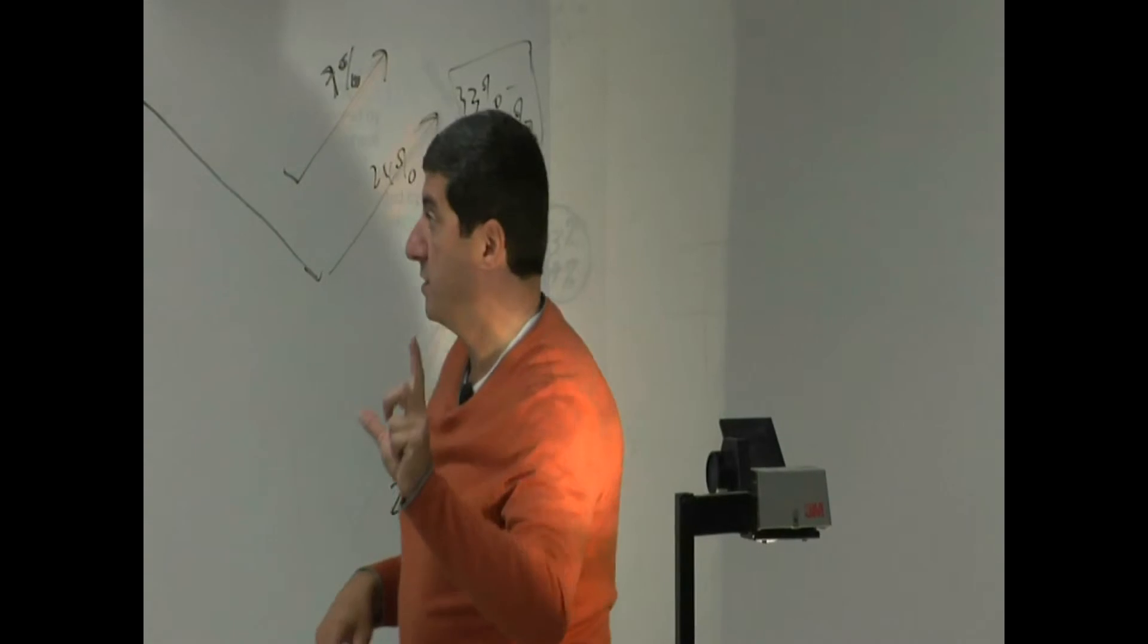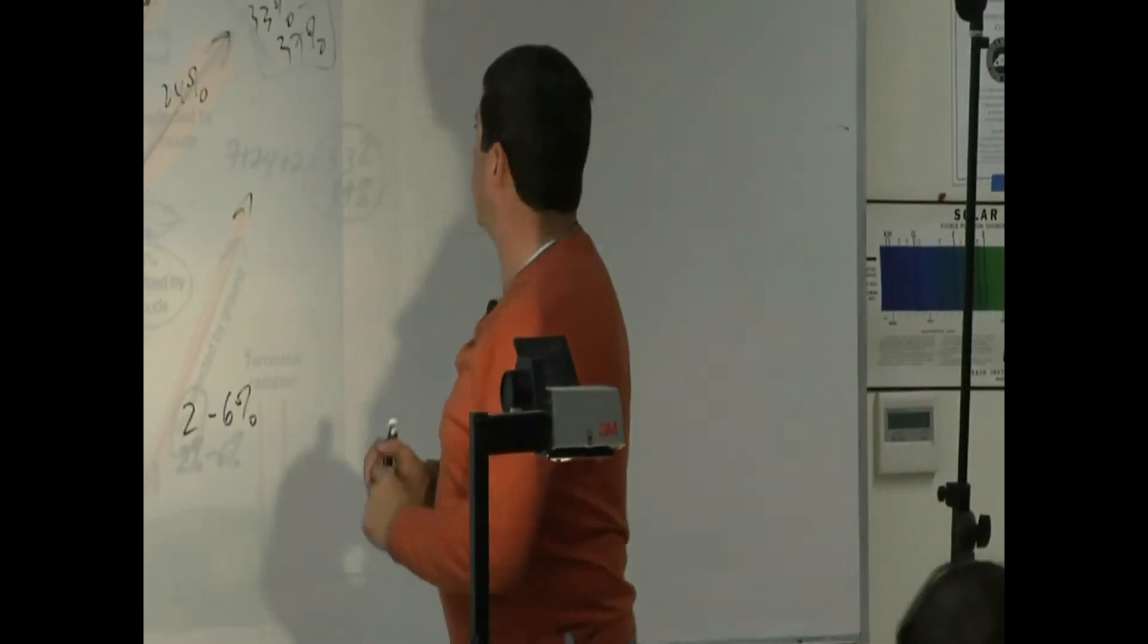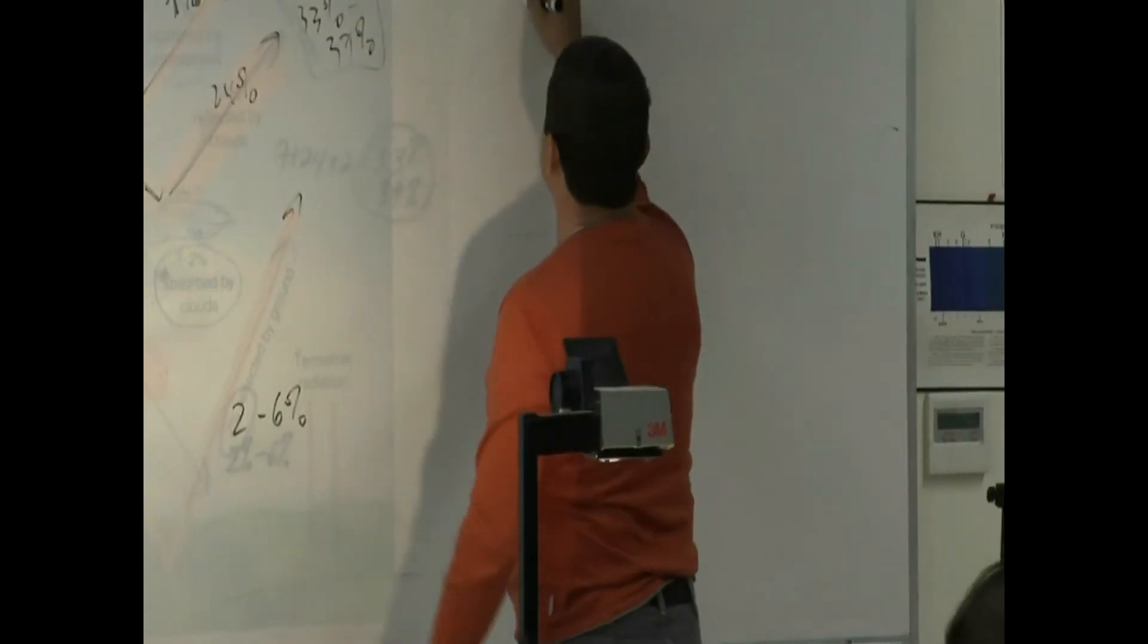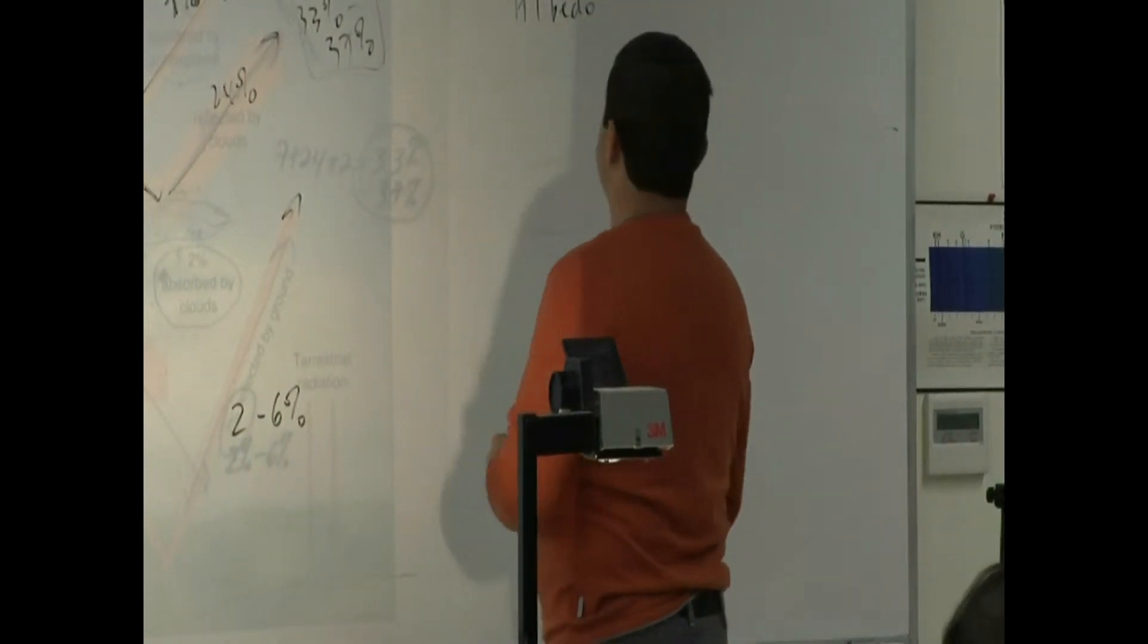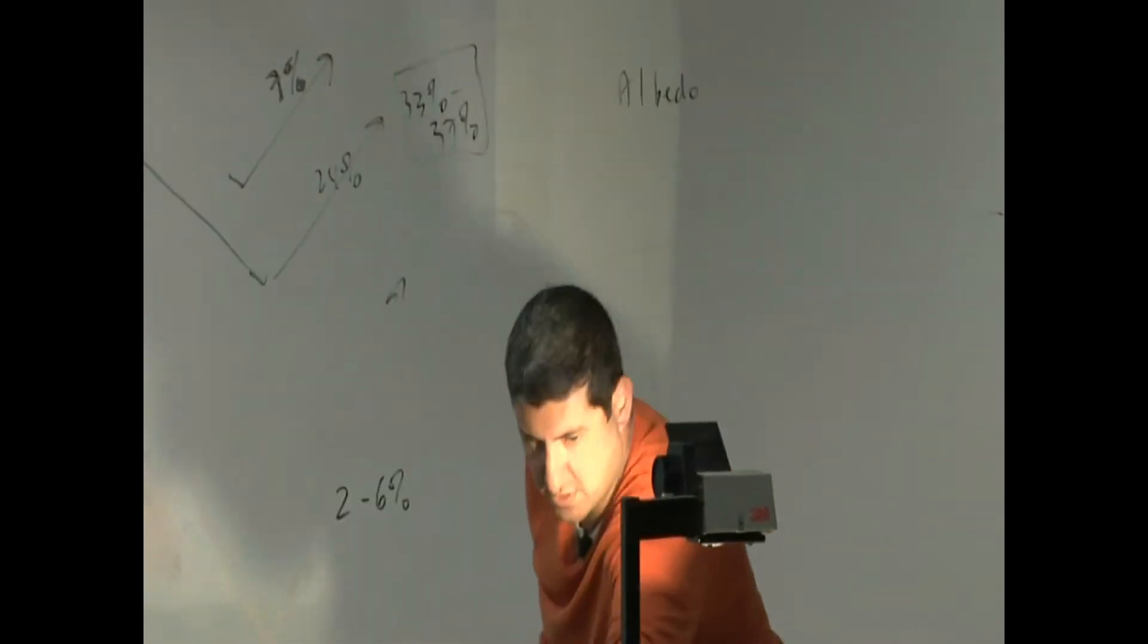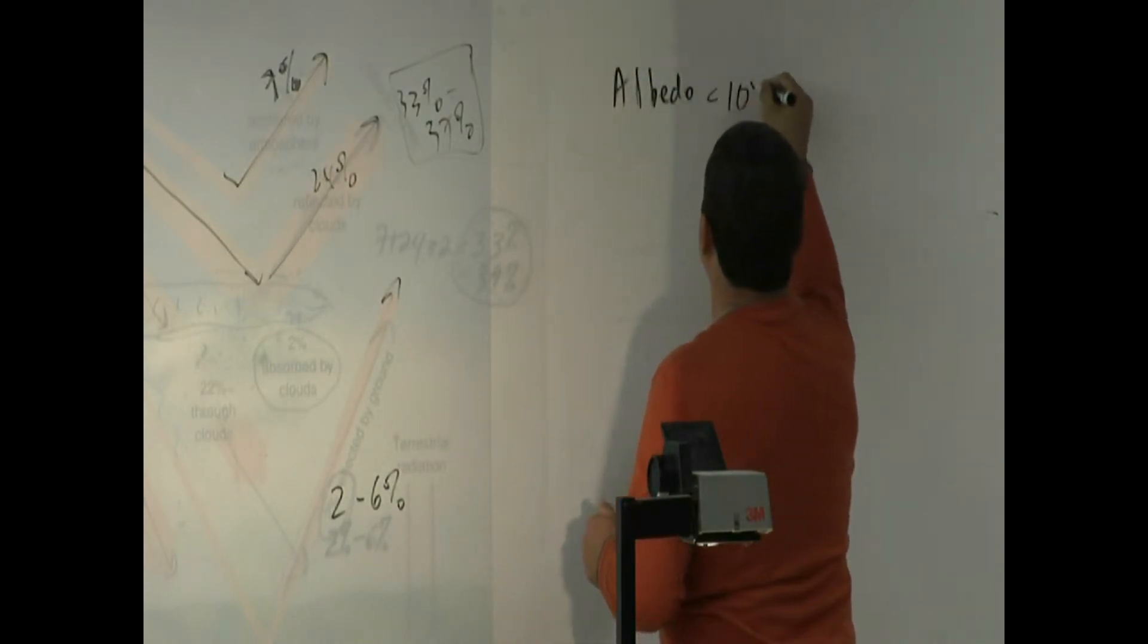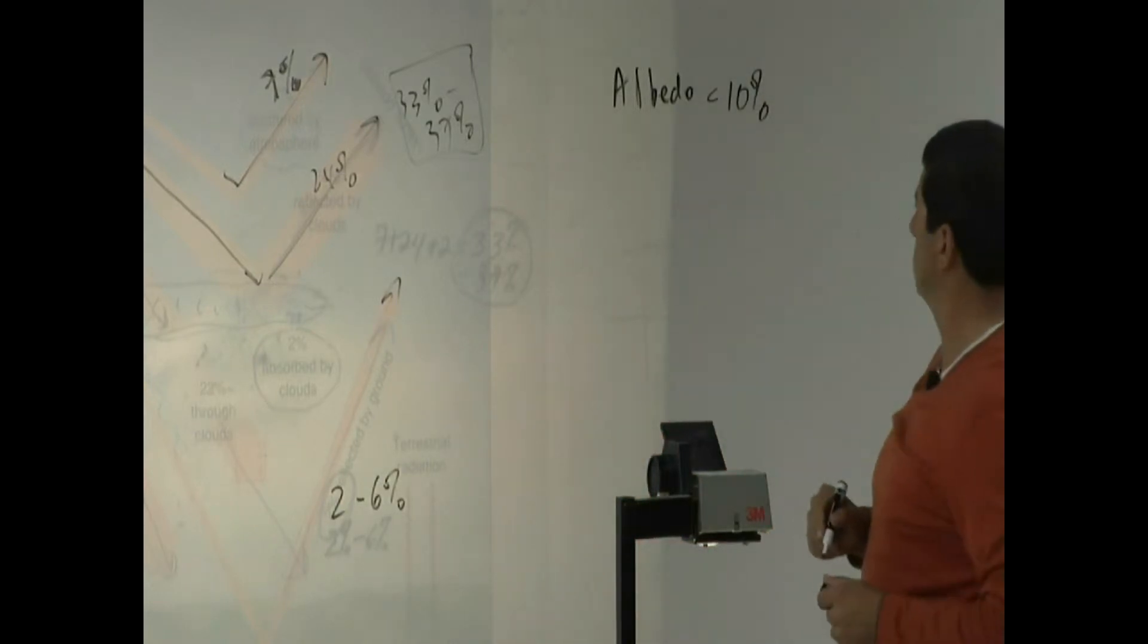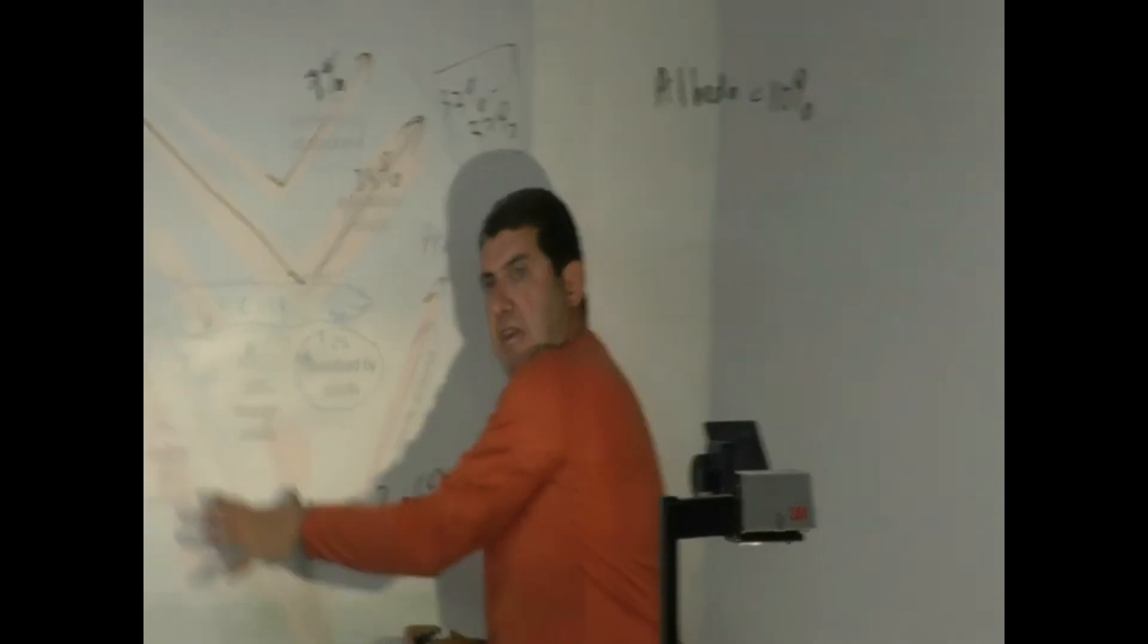If the earth absorbed a lot more, let's say it only sent back, let's say the albedo of the earth had been 10%. What would that mean?